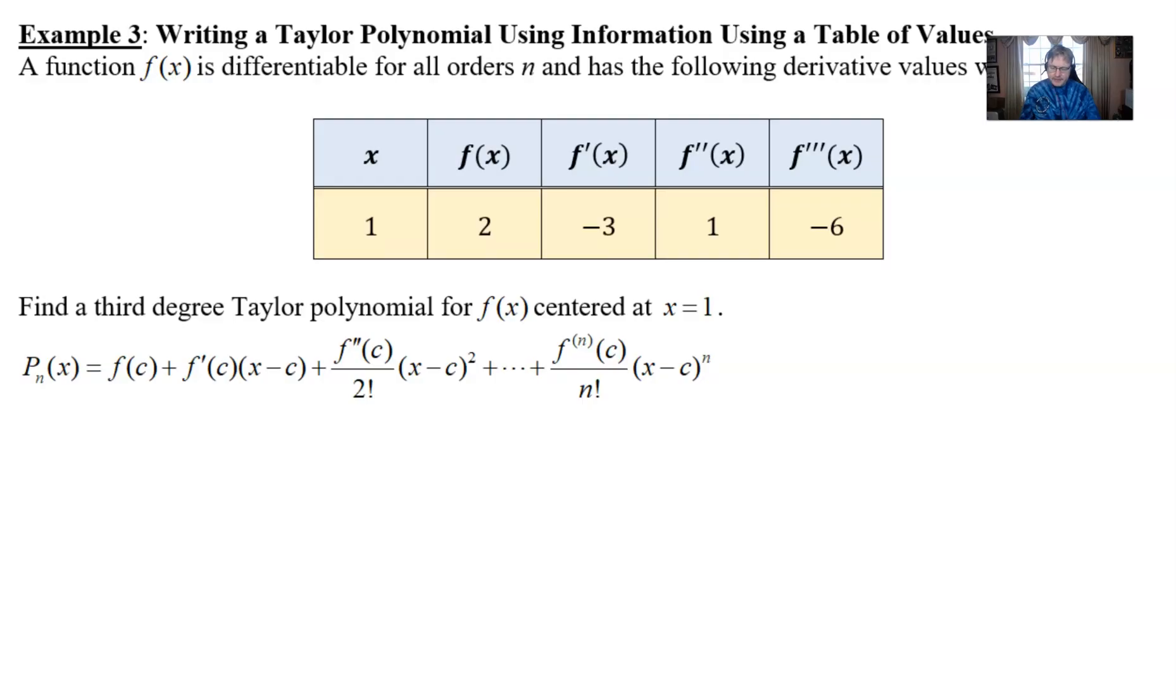So in our example three, as you can see, we're given this table and the directions read a function f(x) is differentiable for all orders n and has the following derivative values when x is one. Just some preliminary information that's needed in order for us to pull off what we want to pull off. So you're typically going to see that language in all of these questions.